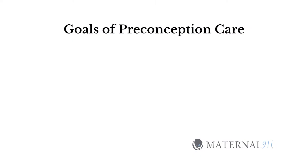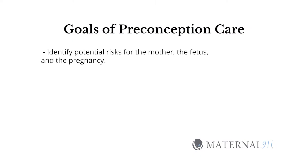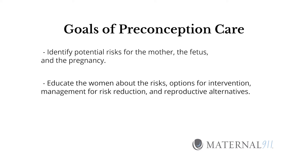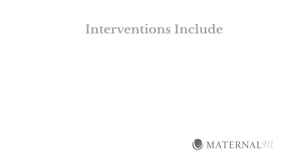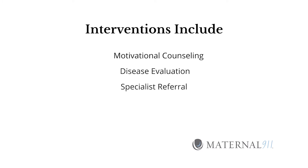We're here to talk to you today about preconception counseling. Cisgender women of childbearing age should develop a reproductive health plan. The goals of preconception care are to identify potential risks for the mother, the fetus, and the pregnancy; educate women about the risks, options for intervention, and management for risk reduction and reproductive alternatives; and initiate interventions to provide optimum maternal, fetal, and pregnancy outcomes. Interventions include motivational counseling, disease evaluation, and specialist referral.